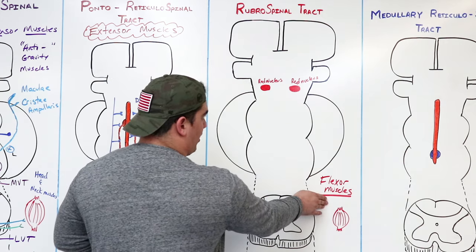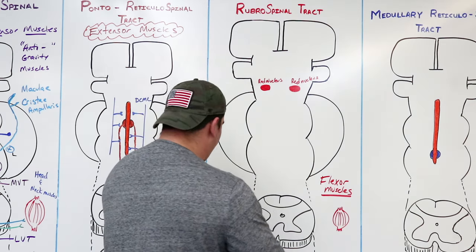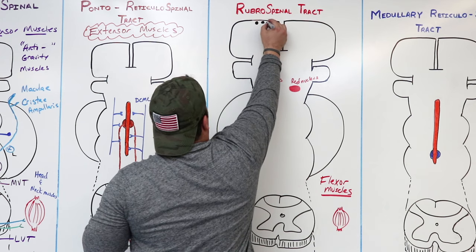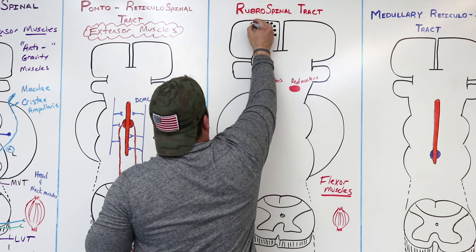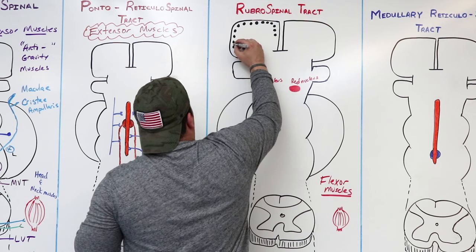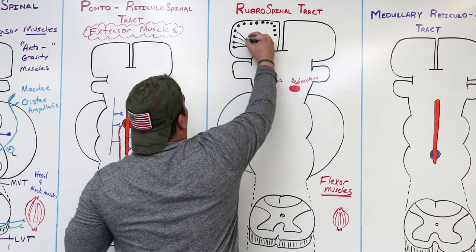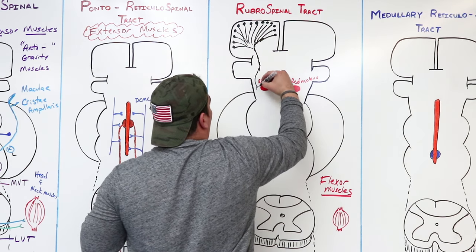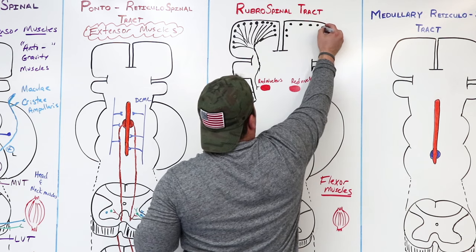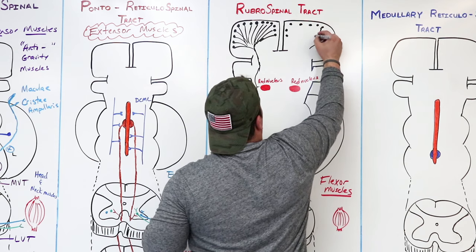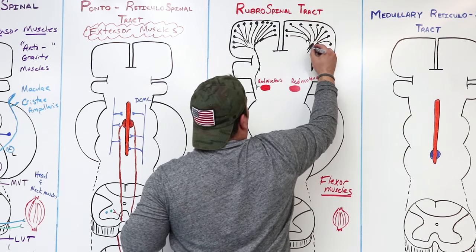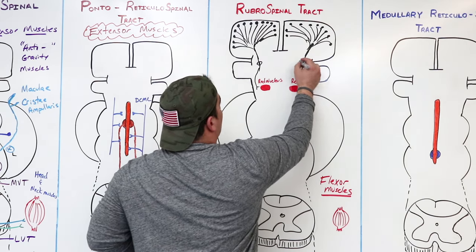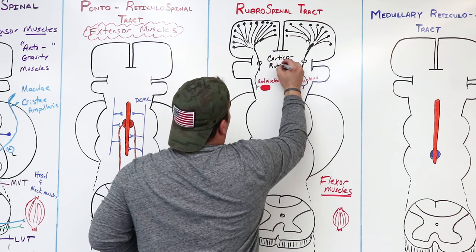Now, this tract technically starts within the red nucleus, but there's got to be something that stimulates these nuclei. The cerebral cortex — with cell bodies primarily from the primary motor cortex, the premotor cortex, and the supplementary motor area — can send fibers that give stimulation to the red nucleus. These are called corticorubral fibers, because they go from the cortex to the red nucleus.